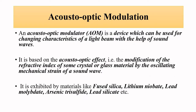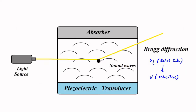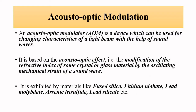This is the whole concept of acousto-optic modulation. The material used can be of different types. Commonly used materials are fused silica, lithium niobate, lead molybdate, arsenic trisulfide, lead silicate, and so on.